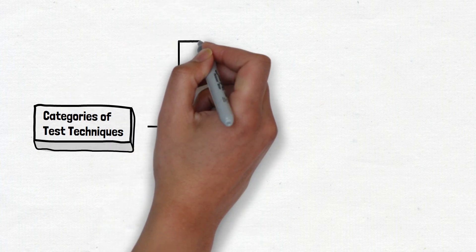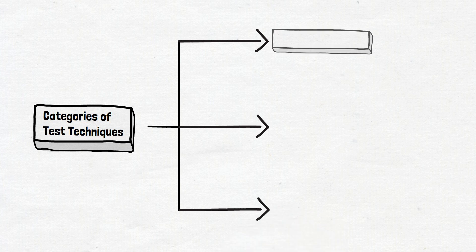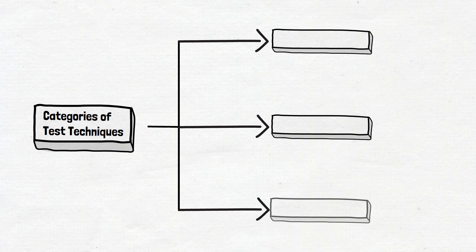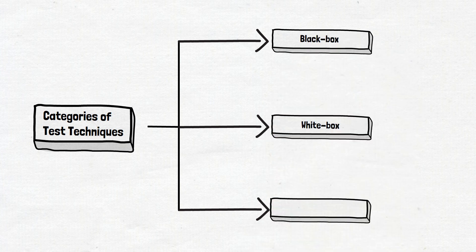Let's draw the schema. ISTQB defines three main categories of test techniques: black box, white box, and experience-based. That's all — no gray box, no static or dynamic distinction in the newest version. Just these three simple main categories, each containing different sub-techniques.